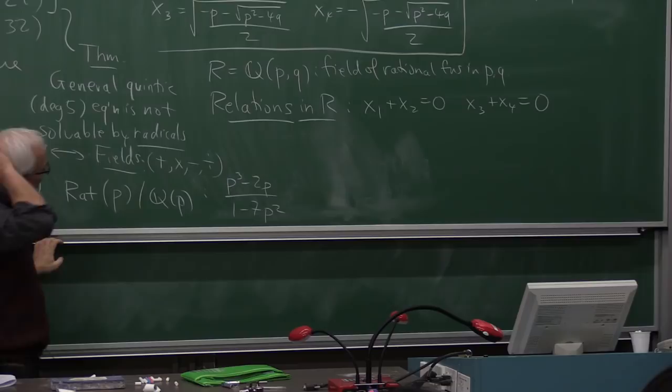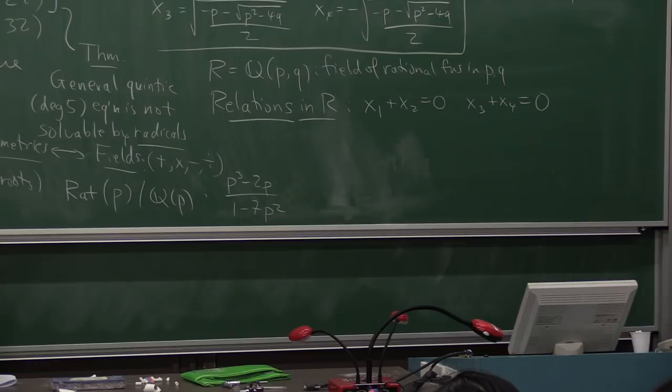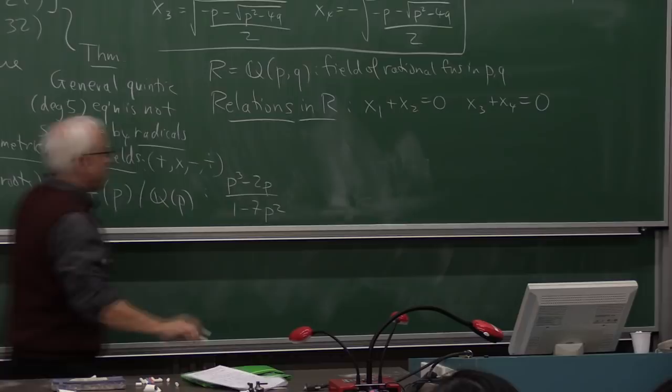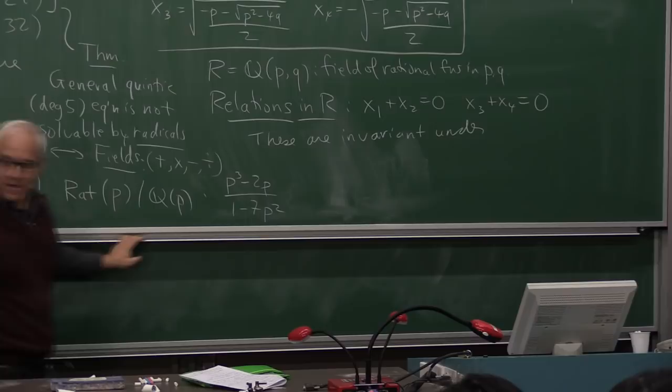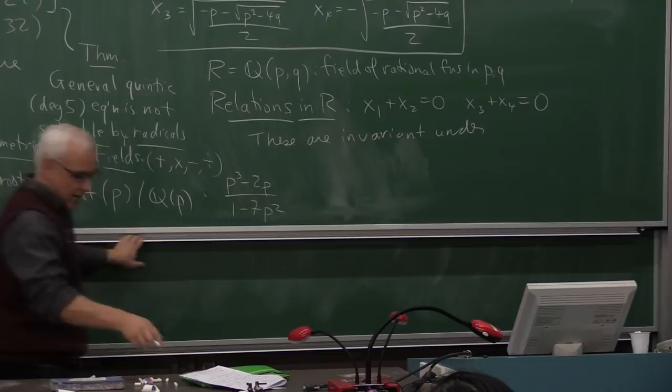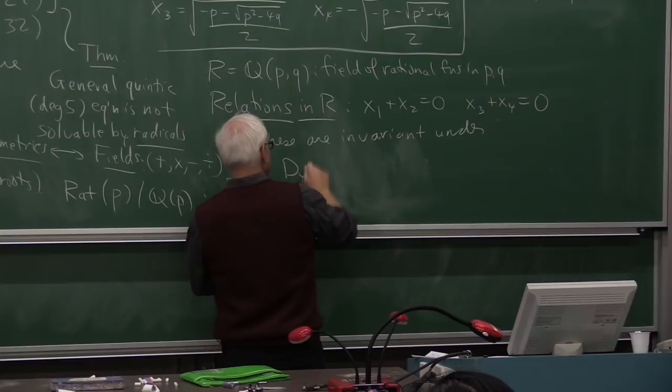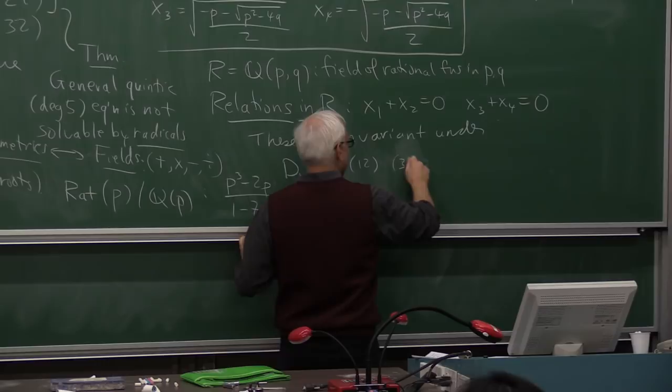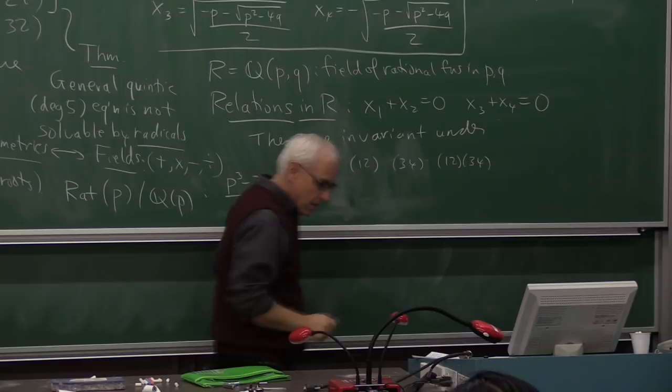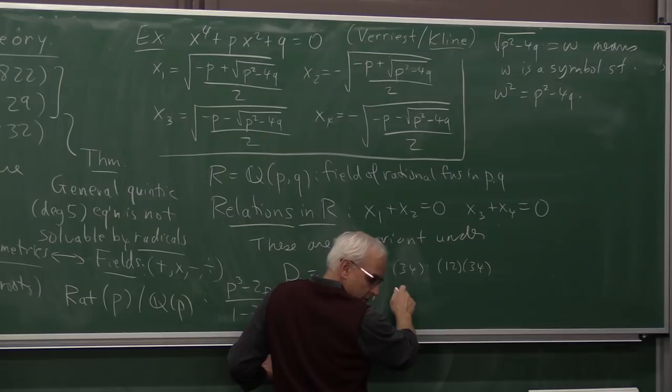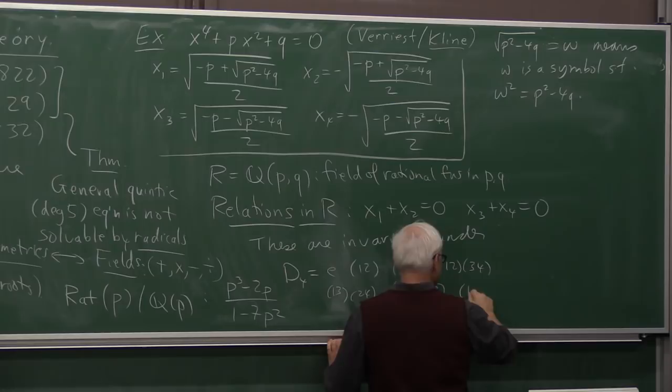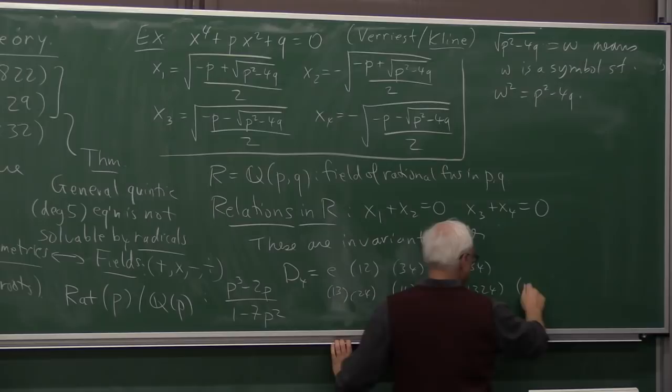Okay, now Galois would say, all right, let's ask, what are the permutations of these four things that maintain these relations? So these relations are invariant under certain permutations of the four numbers x1, x2, x3, x4. In fact, the permutations are D4, which consists of the identity (1,2,3,4), and (1,2)(3,4), and (1,3)(2,4), and (1,4)(2,3).